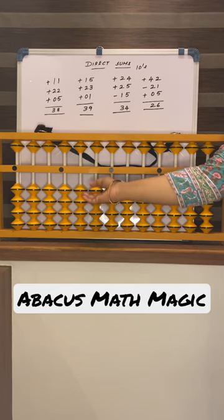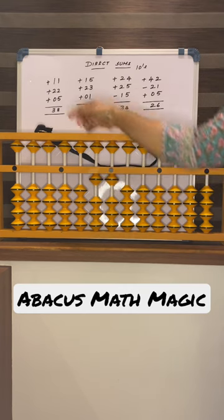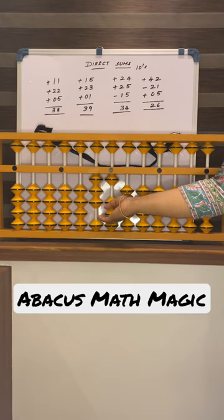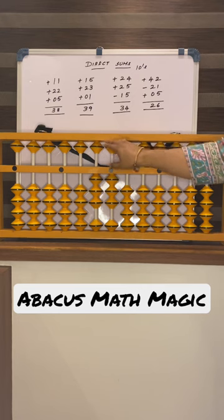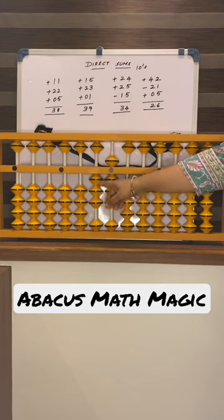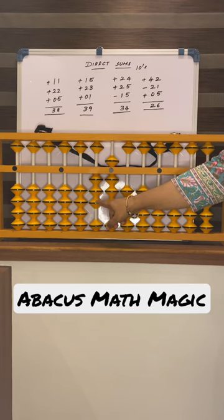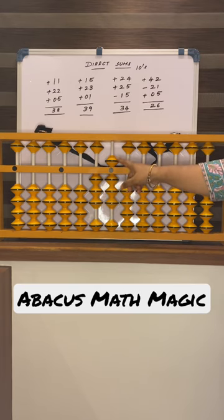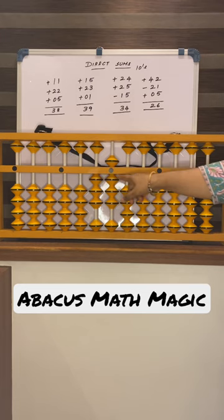Start. 11, 22, 5. What is the answer here? 38. 3 beads in 10s place, 5, 6, 7, 8 — 8 in 1s place. Now, 38.